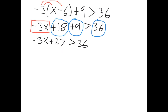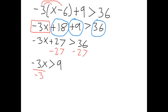We need to get rid of plus twenty-seven, so we subtract twenty-seven from both sides. That gives us negative three x is greater than nine. Then to get rid of the negative three, we divide both sides by negative three. When you do that, x is less than negative three — we change the sign because we divided both sides by a negative.